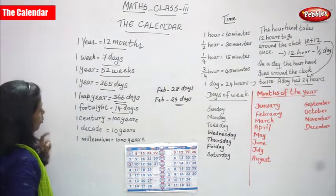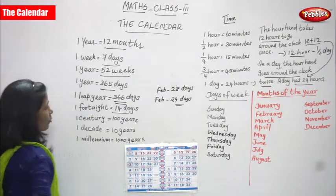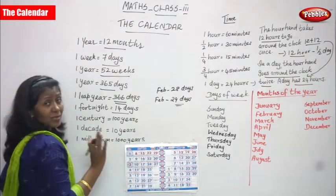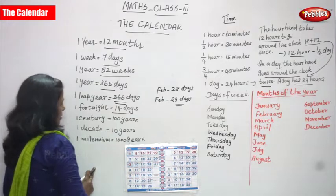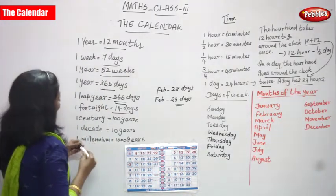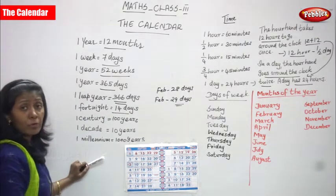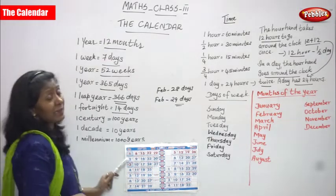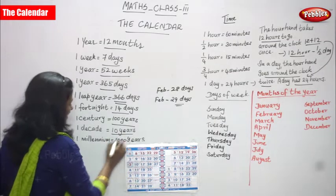One fortnight is equal to 14 days. Fortnight means two weeks combined together — that is 14 days. One century is equal to 100 years. One decade is equal to 10 years. One millennium is equal to 1000 years. You must memorize all of these: one century equals 100 years, one decade equals 10 years, and one millennium equals 1000 years.